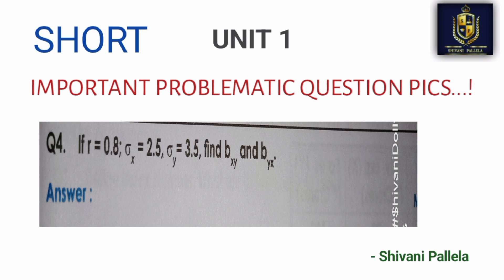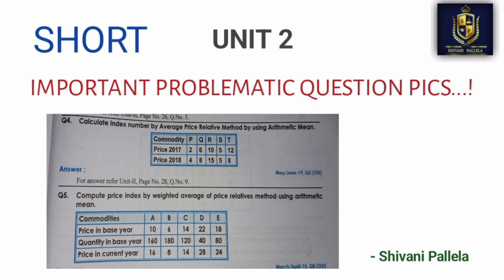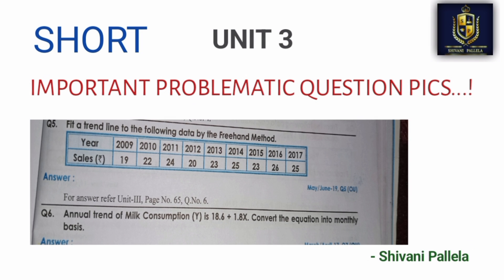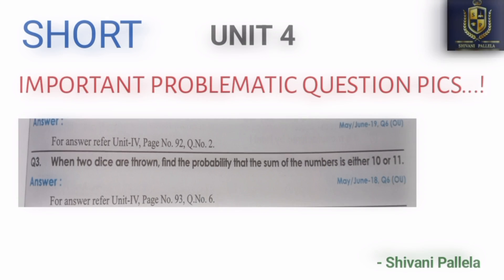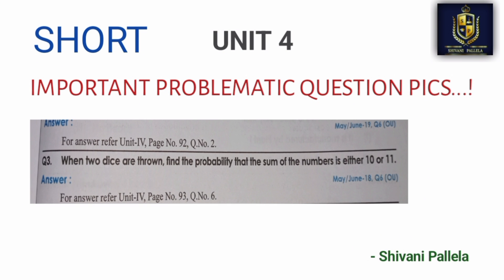In Unit 1, if r is equal to 0.8 and the standard deviation of x is equal to 2.5, then find bxy and byx. This is a short but very important question. As-is, these questions are repeated. Values change slightly, but the format repeats every 2 to 3 years. In Unit 1, these values are repeated. These questions are very problematic but very easy to solve in Business Statistics. If you have a theory question, you have a chance to use a short key approach.